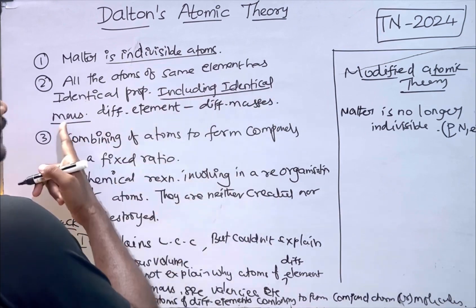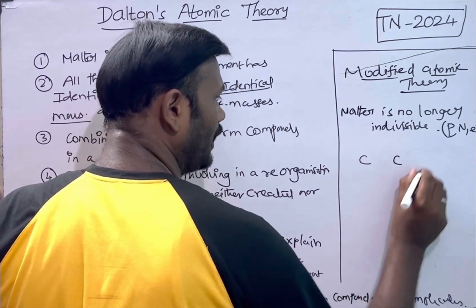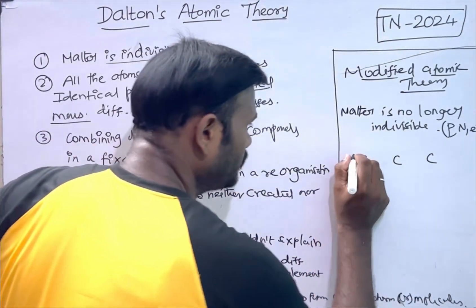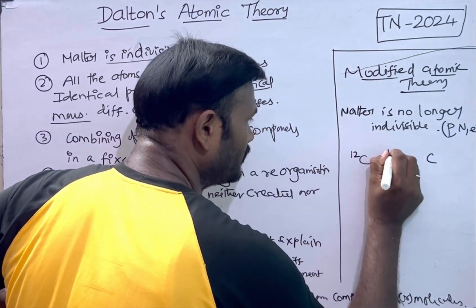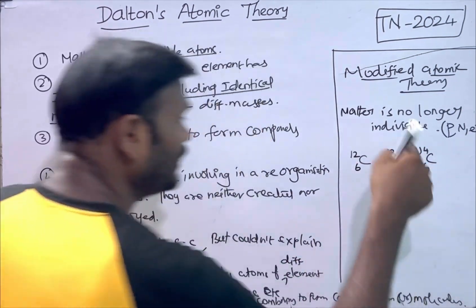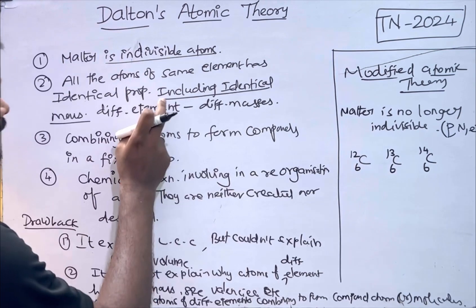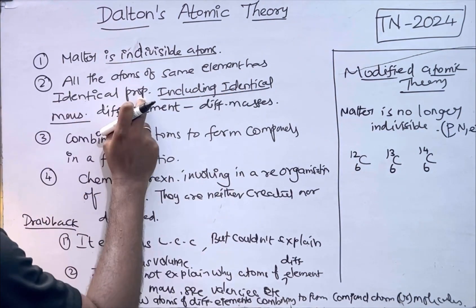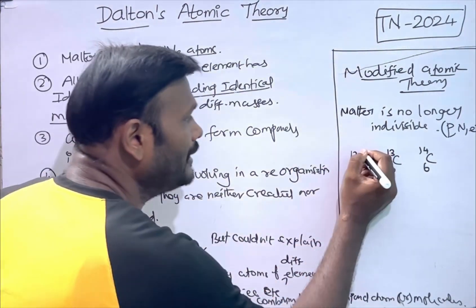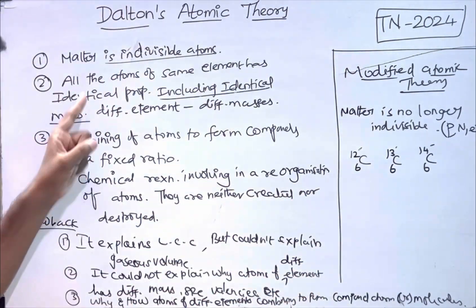For example, carbon has three different isotopes: carbon-12, carbon-13, and carbon-14. The atomic numbers are the same, but the atomic masses are different. So they are identical atoms with identical properties, but they don't have identical masses. The second concept of Dalton's theory breaks down.